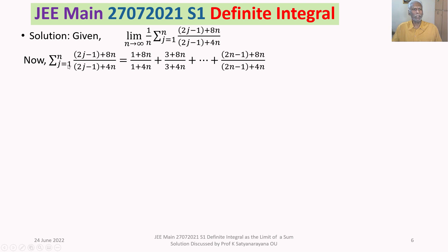When j=n, the term is (2n − 1 + 8n) / (2n − 1 + 4n). This is the sum of n such terms.